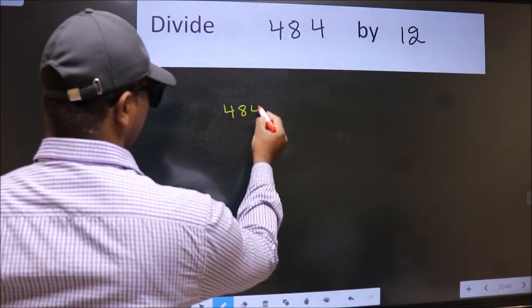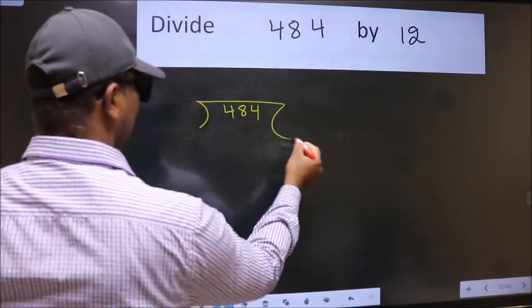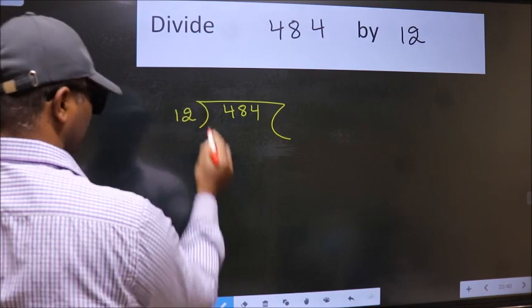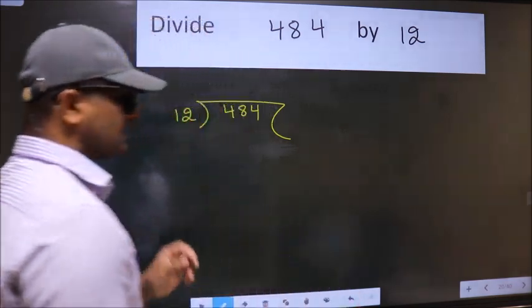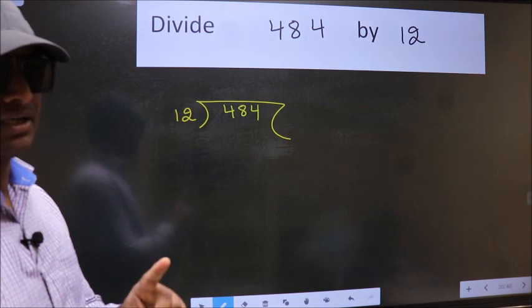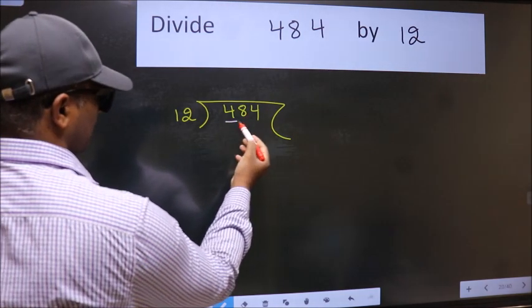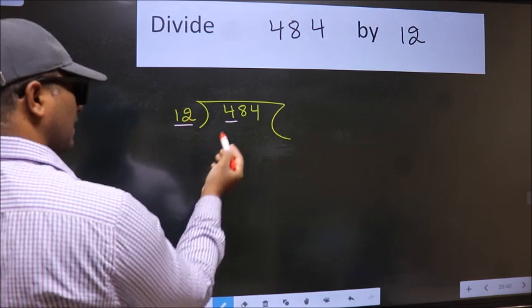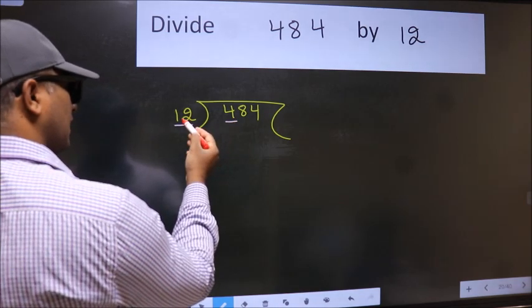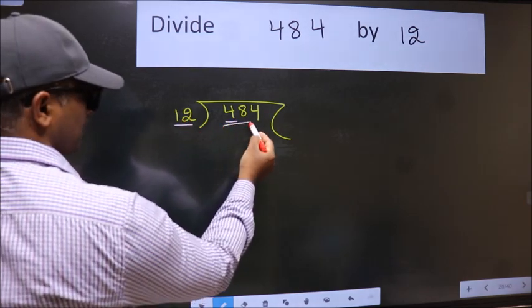We should frame it in this way. 484 here, 12 here. This is your step one. Next, here we have 4 and here 12. 4 is smaller than 12, so take two numbers, 48.